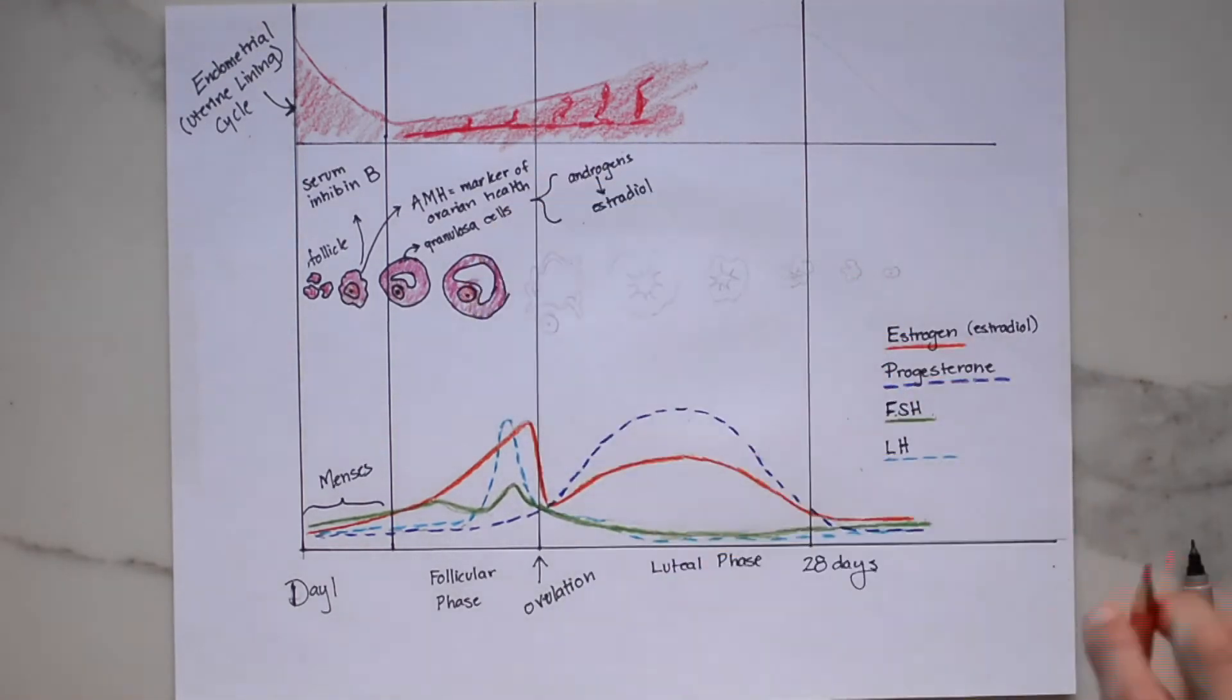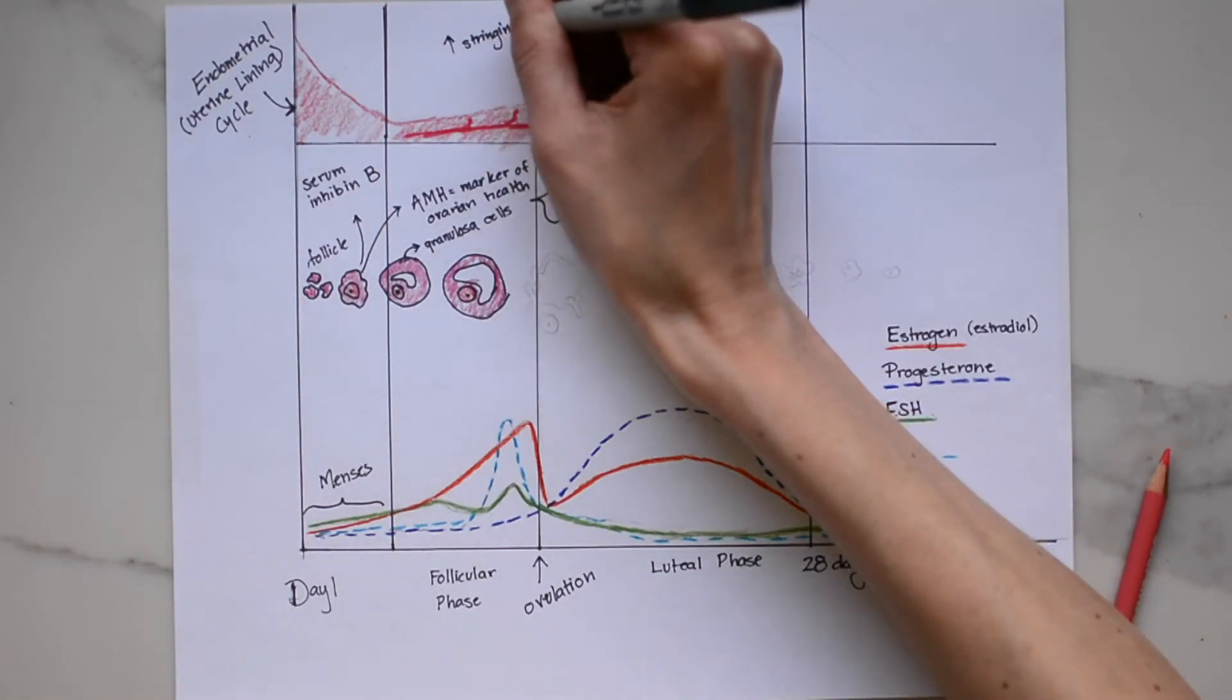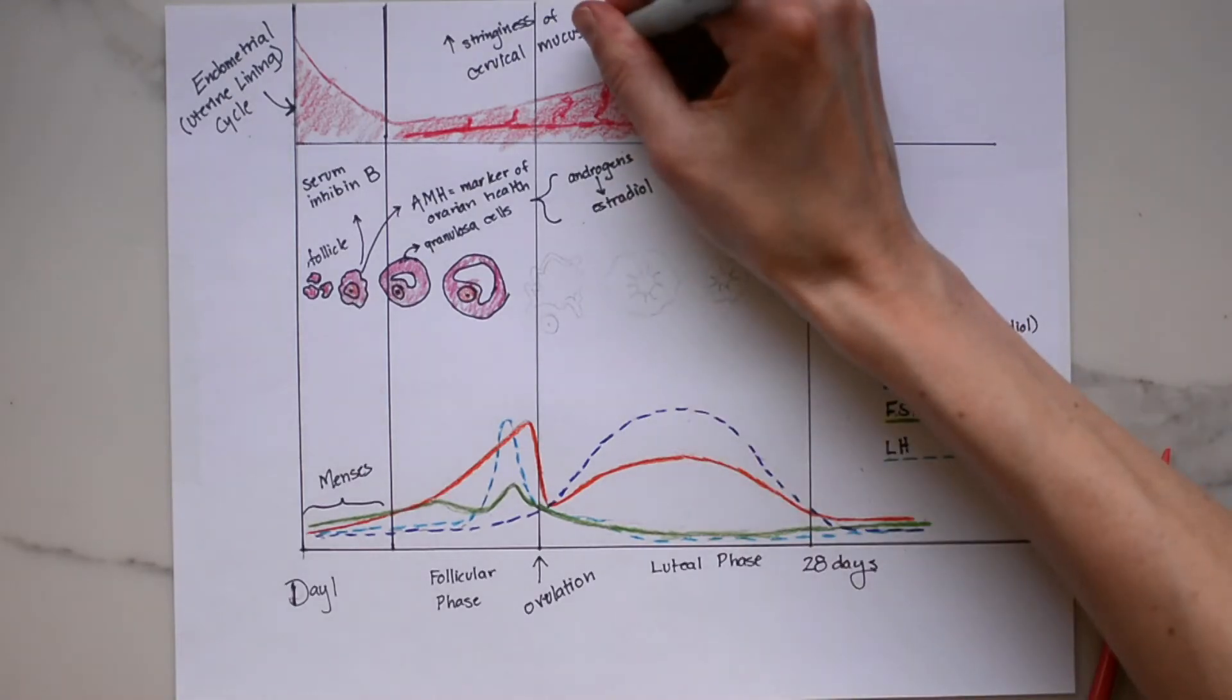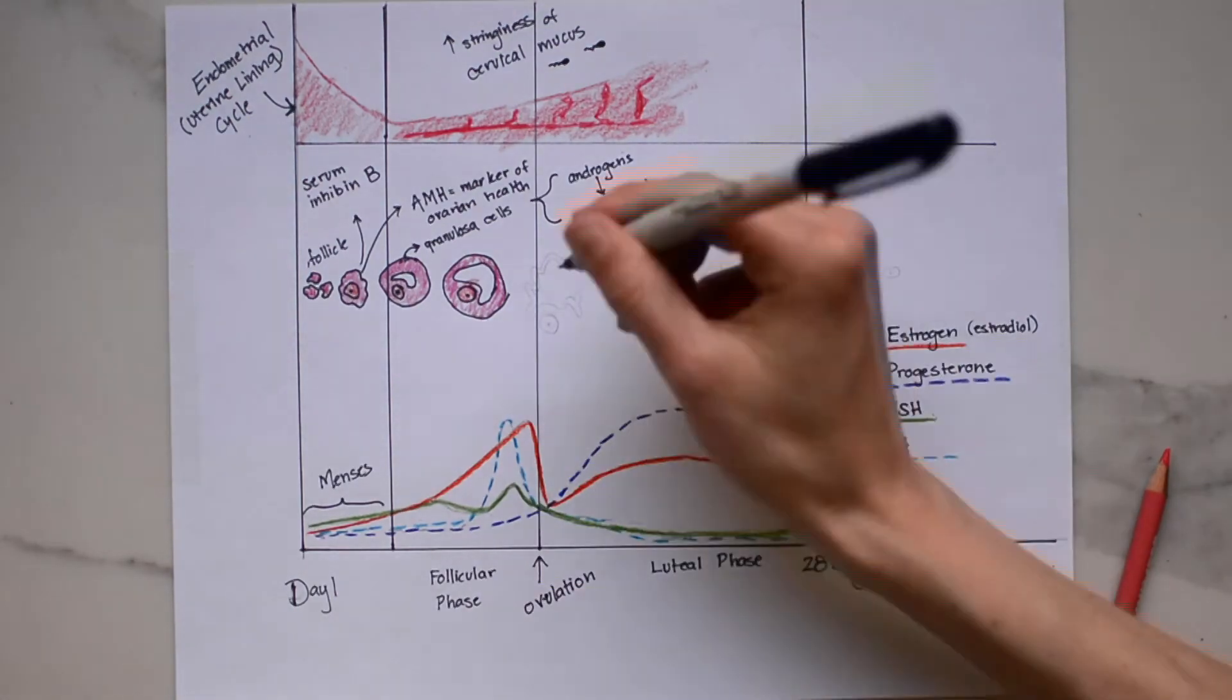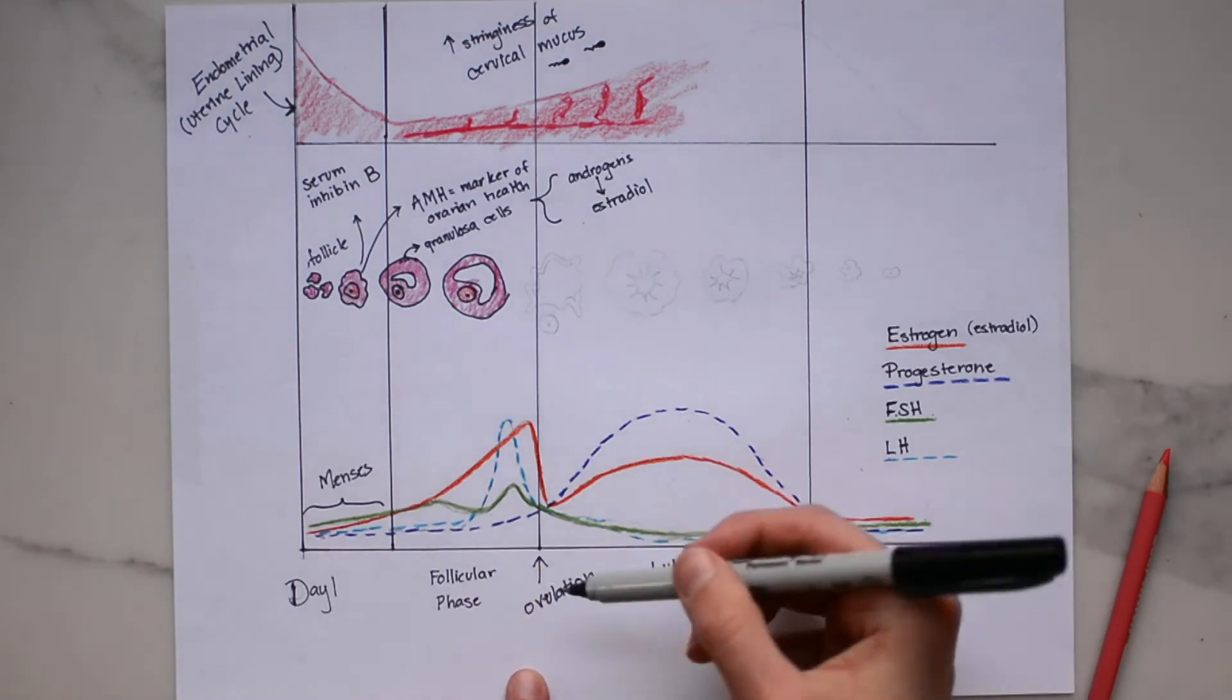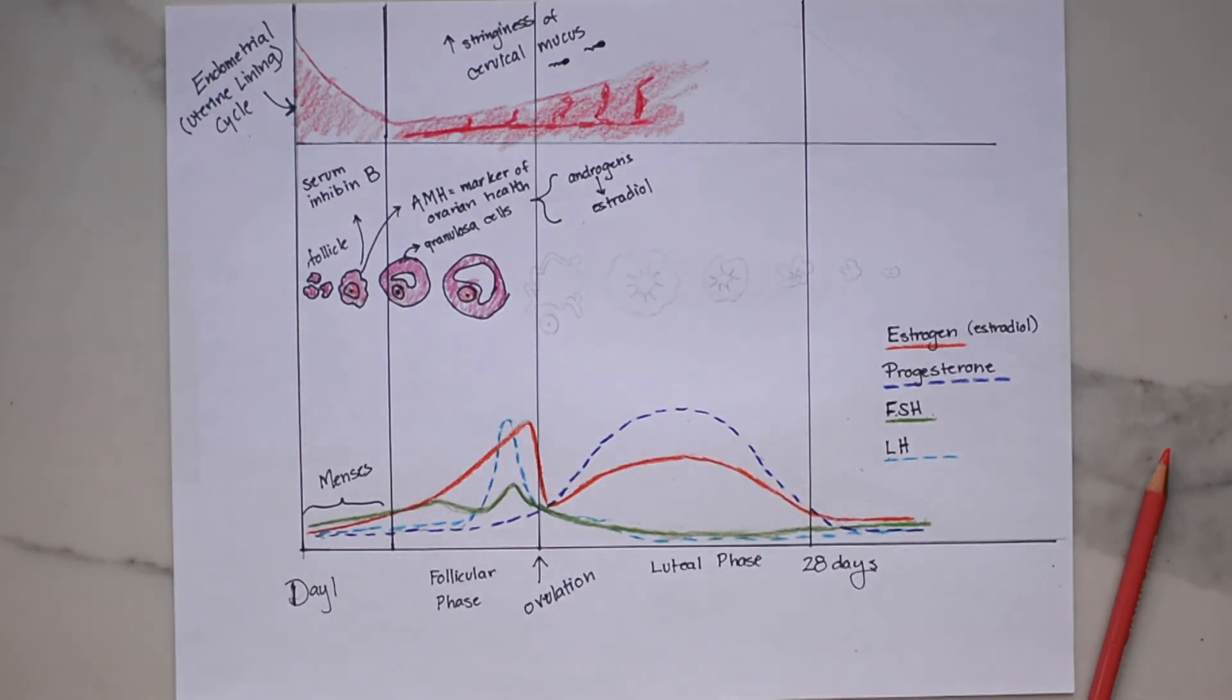Now the increasing estrogen results in an increase in the stringiness of cervical mucus. So many women start to notice the change around ovulation in cervical mucus and the stringiness of cervical mucus is thought to help with sperm transit in the uterus ensuring that they get to the fallopian tubes and can fertilize the egg. Now out of all the follicles that are growing a dominant one is selected and this is when we reach the luteal phase and the start of the mid cycle surge and ovulation.